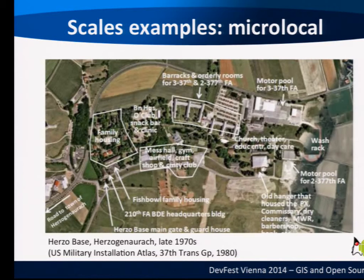So we have now introduced GIS and I've given a lot of definitions. Is everything clear? Now we might see some things in action. We will speak about web mapping tools, desktop applications, and geospatial libraries.